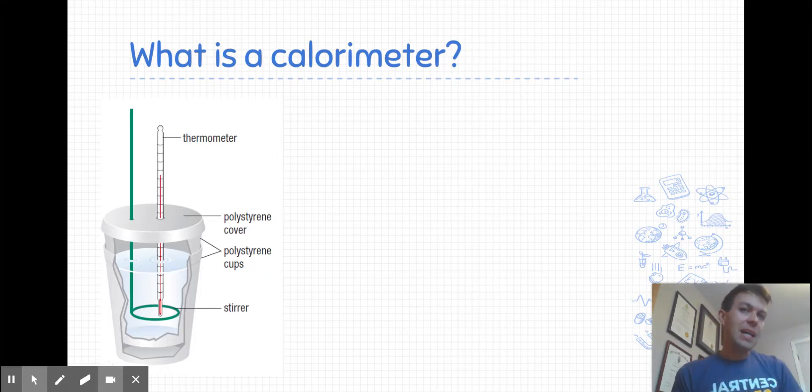The simplest calorimeter is a coffee cup calorimeter. The one you see there on the screen involves two styrofoam coffee cups, one embedded in the other, a lid on top, and then typically water or a dilute solution, often an acid, is inside the coffee cups. When you carry out some sort of reaction in there, there's a little hole on the top where you can insert a thermometer to measure temperature changes. The point of it is that we've provided insulation so that we are measuring the energy exchange fairly close to the actual energy exchange and we haven't lost a lot of that energy to the surroundings.